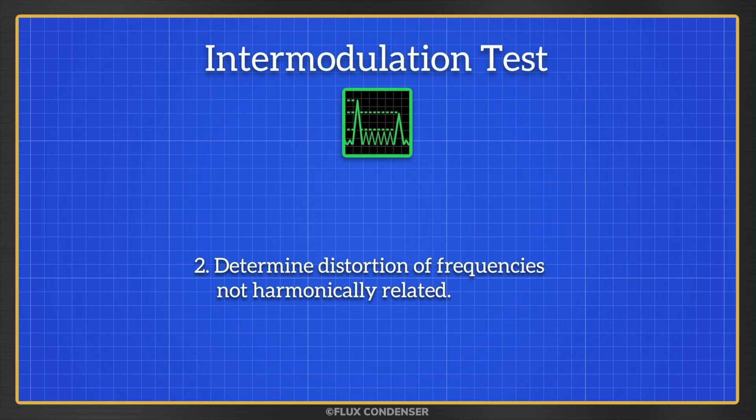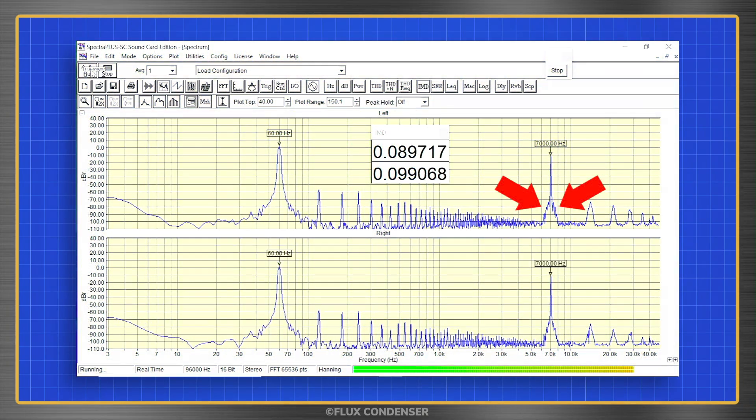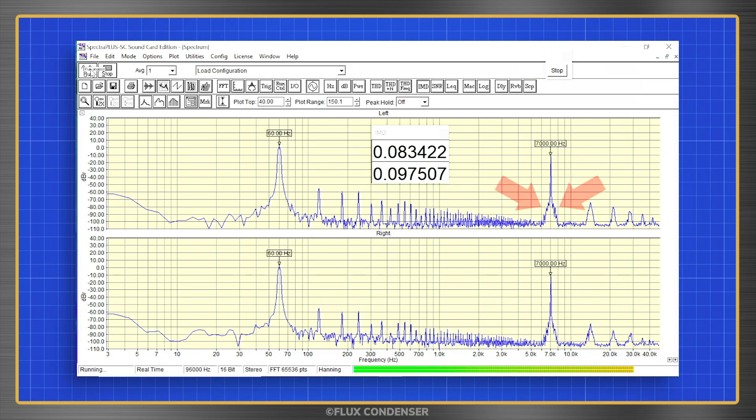And this is critical as non-harmonically related distortion is discordant, and sounds far worse than harmonically related distortion. That's because non-harmonic frequencies are completely unrelated to the fundamental frequencies. This test is usually done with a combination of 60Hz and 7kHz tones.